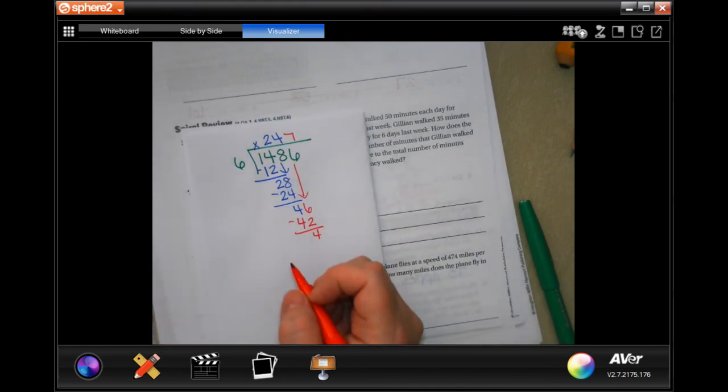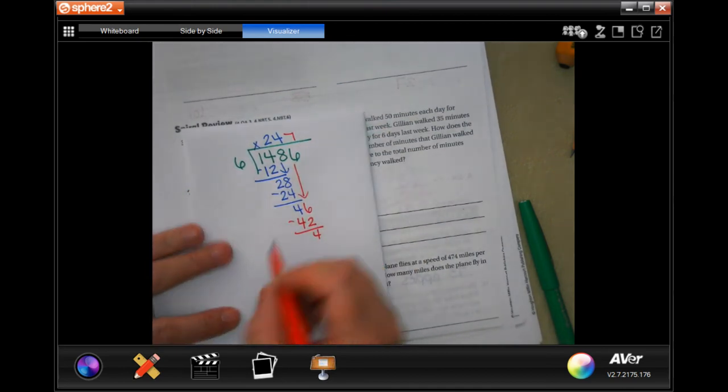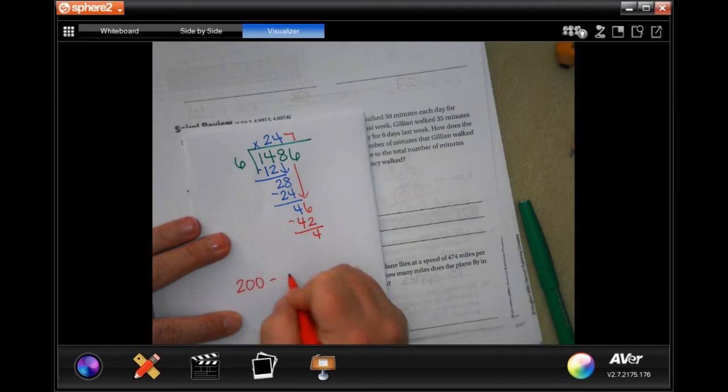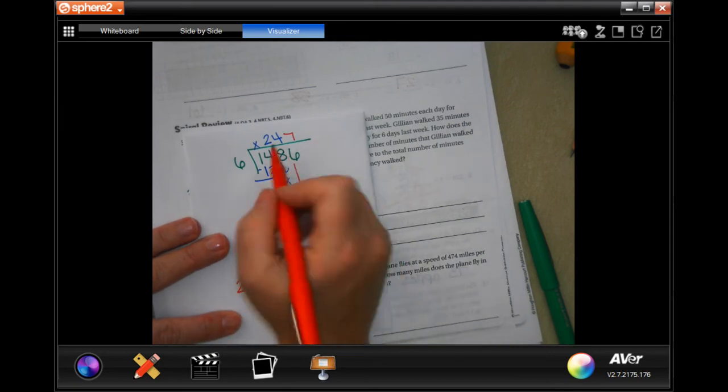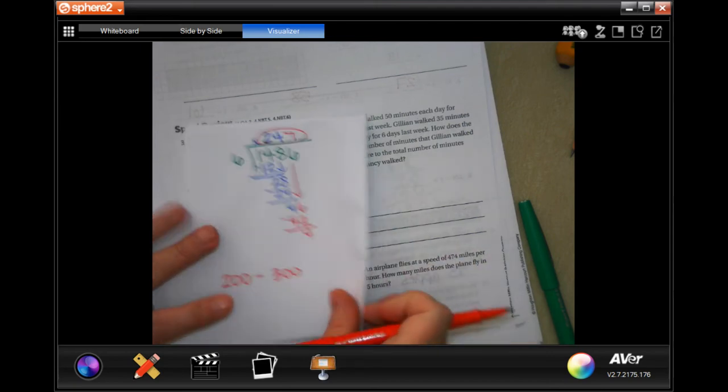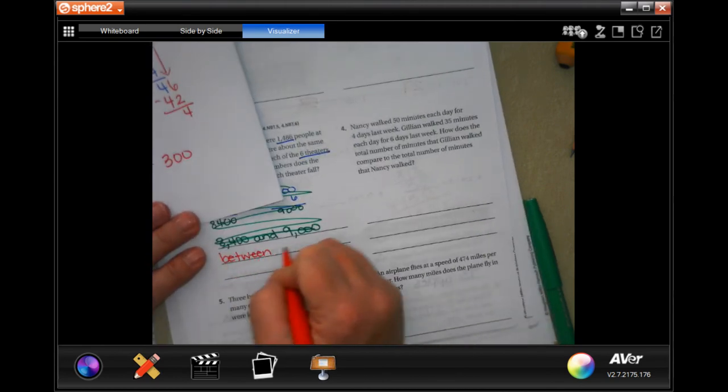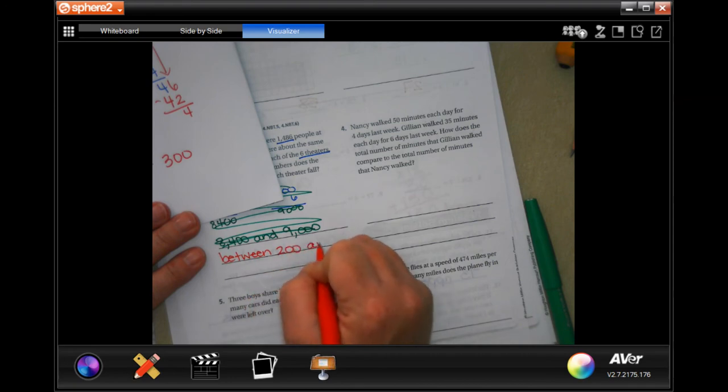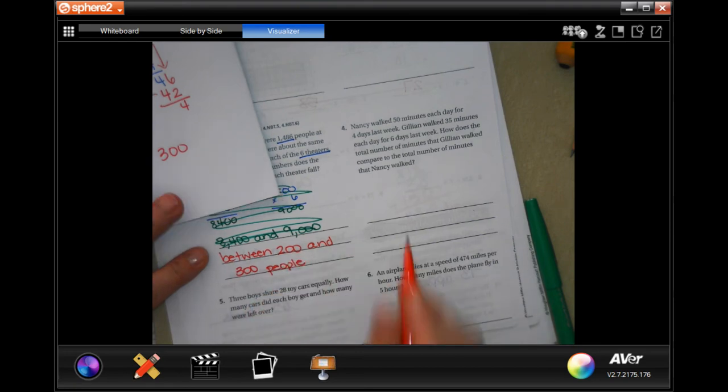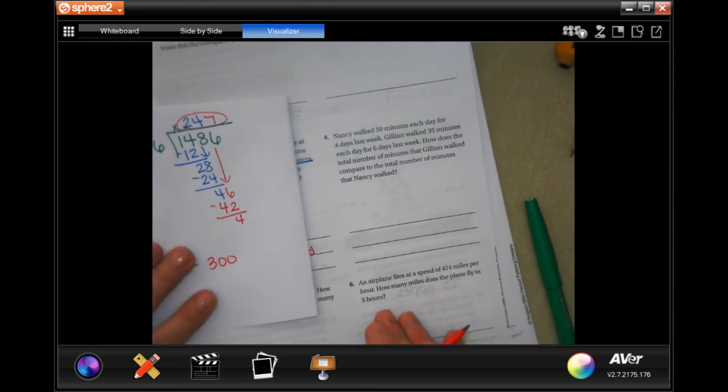So, between 200 and 300 people. 247 is between 200 and 300. Between 200 and 300 people. Sorry about that, guys.